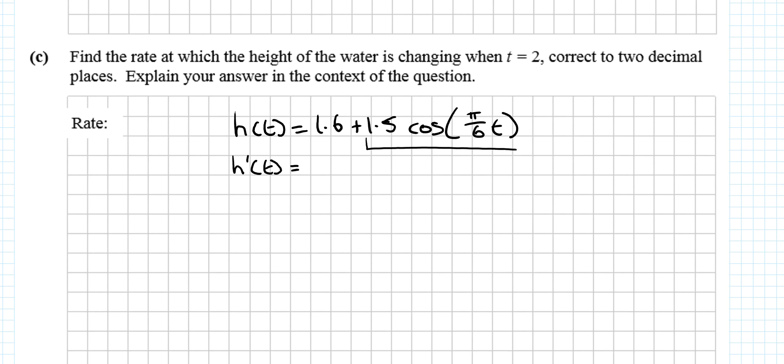The 1.6 is going to disappear. We need to remember how to differentiate the trigonometry part. When differentiating trigonometry, differentiate the angle, then differentiate the trig, then leave the angle alone. It's going to be 1.5 times the differentiation of the angle. If this was 7t and you differentiated, you'd get 7. So when we differentiate π/6 t, you just get π/6.